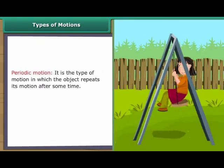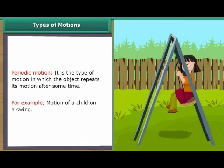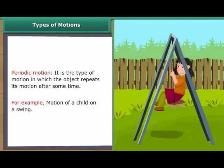Periodic Motion. It is the type of motion in which the object repeats its motion after some time. For example, motion of a child on a swing.